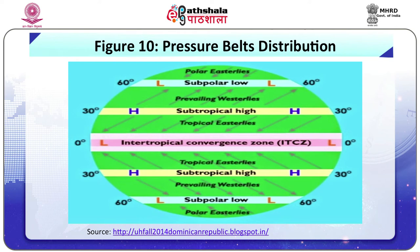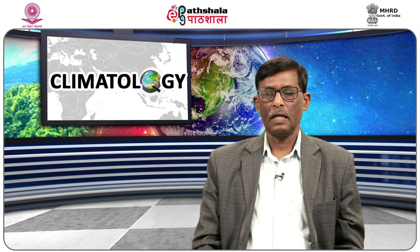The Intertropical Convergence Zone (ITCZ) is a low-pressure belt found generally along the equator. It is a zone where the winds coming from subtropical high-pressure belts of both hemispheres converge near the equator. Since this zone experiences high temperature throughout, the air in this zone is heated up and gets sparse in terms of density.